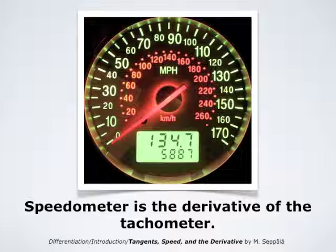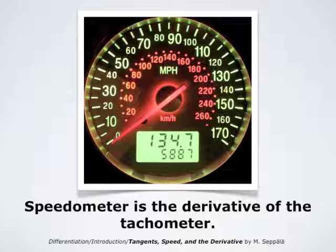Here we see a picture of the tachometer of a car that shows how many miles or kilometers the car has traveled, together with the speedometer that shows the speed in miles per hour or kilometers per hour. So the speedometer — the speed — is the derivative of the distance traveled in a given time t.